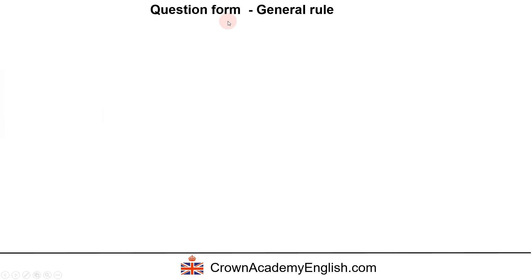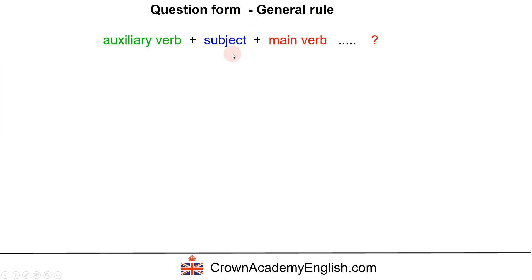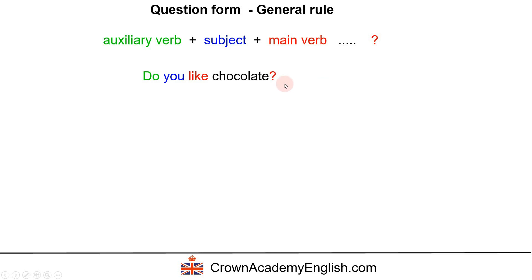Let's look at the form of a question — the general rule. The form is: auxiliary verb, followed by the subject, then followed by the main verb, then the rest of the question, and at the end we have the question mark. For example, 'Do you like chocolate?' — the auxiliary verb is 'do', 'you' is the subject, 'like' is the main verb, then we have the rest of the question, and of course we write the question mark.